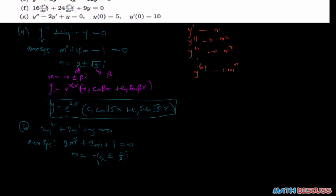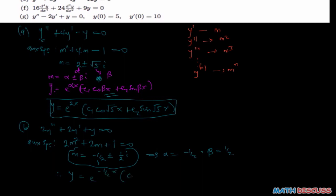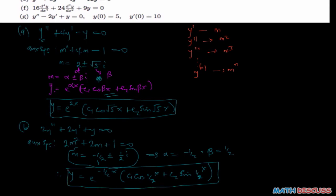Comparing our result with the form alpha plus or minus beta·i, we observe that alpha is negative one half while beta is one half. Based on this, the general solution is y equals e to the power negative one-half·x times (c1 cosine of one-half·x plus c2 sine of one-half·x). And that is the general solution for that part.